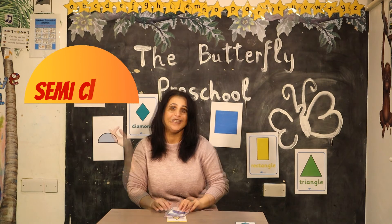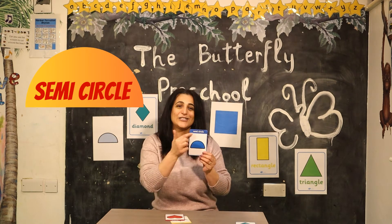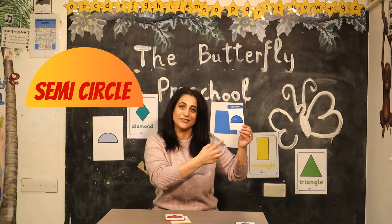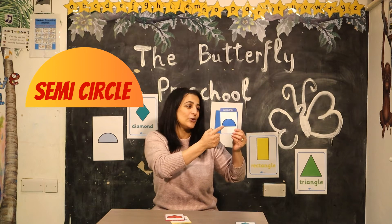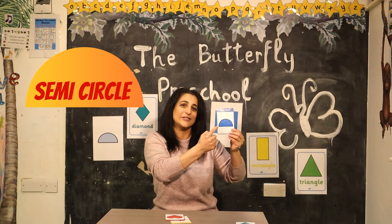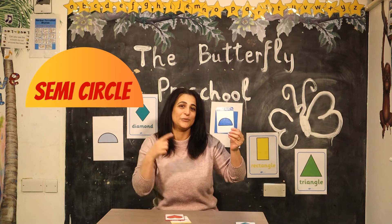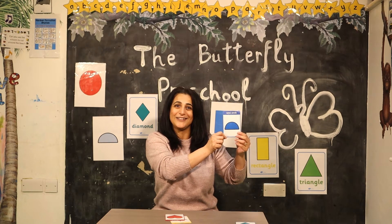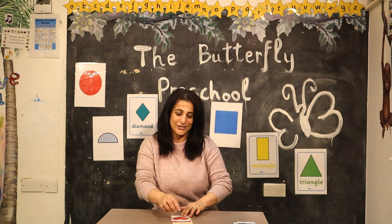It's a semi-circle! A semi-circle has two sides — one curved side and one straight side. It also has two corners. Can you repeat after me? Semi-circle. Well done, perfect!